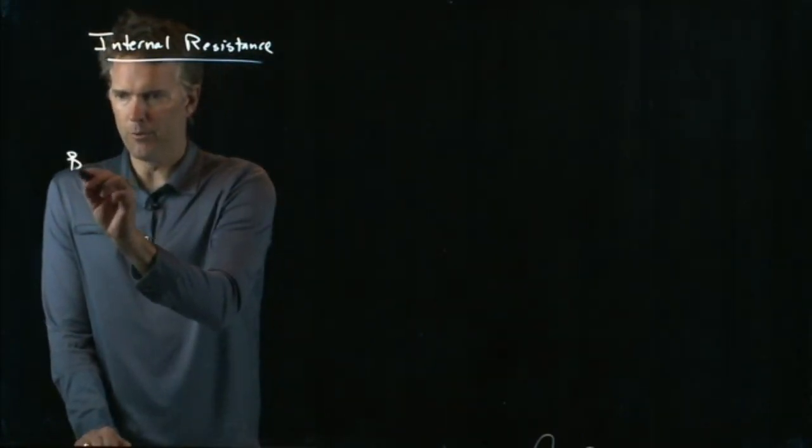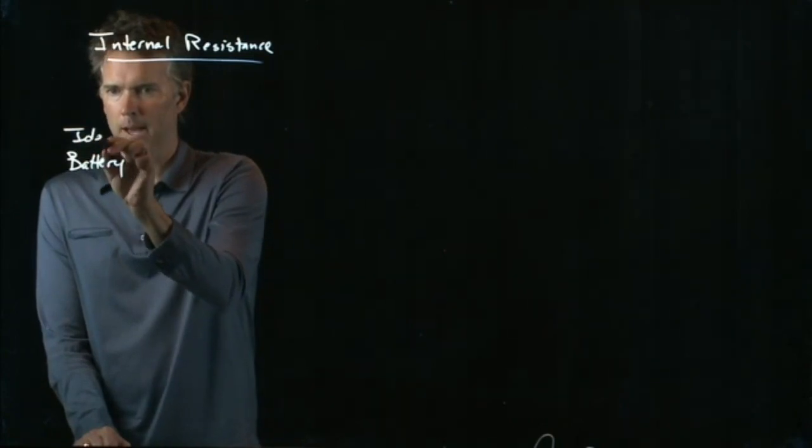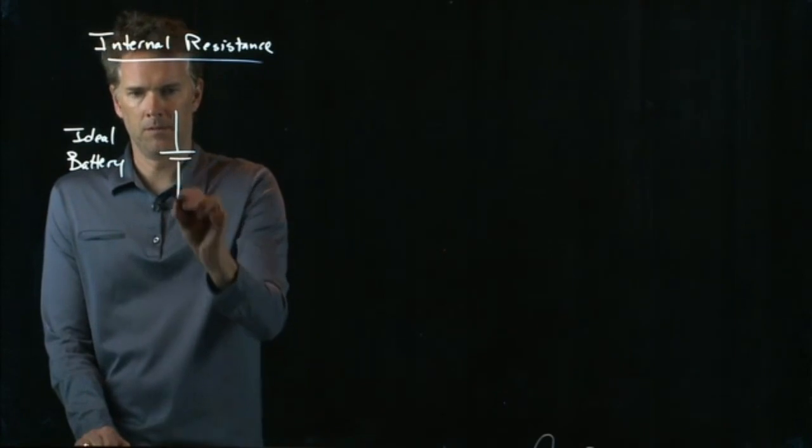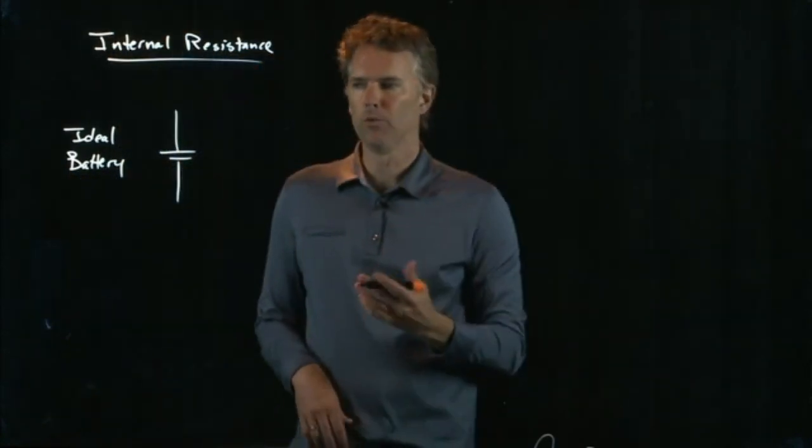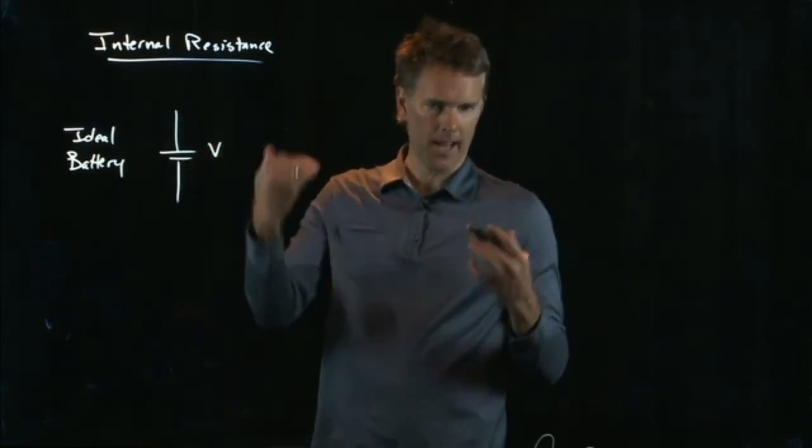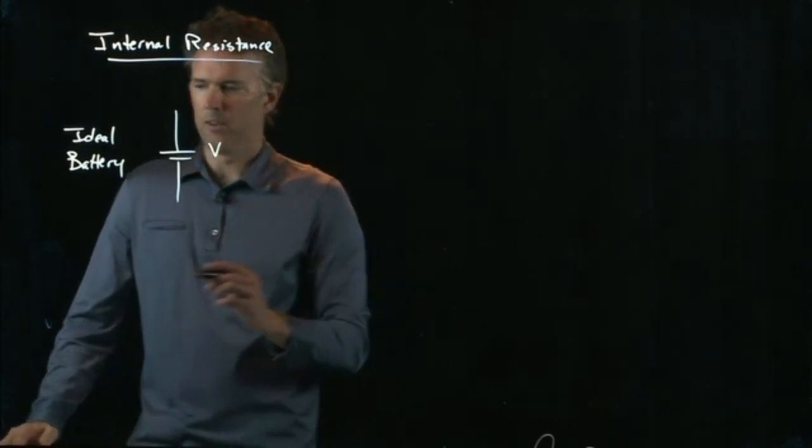So a battery, the way we've drawn it, the ideal battery, just looks like this. It is a voltage supply, V. There is positive on one side, negative on the other. But that's not really what's in a battery.